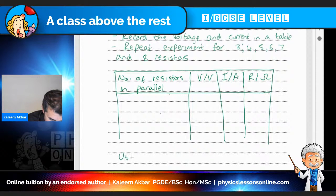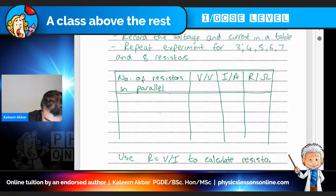And then underneath use R equals V over I to calculate resistance. And then finally draw a graph of resistance against the number of resistors.